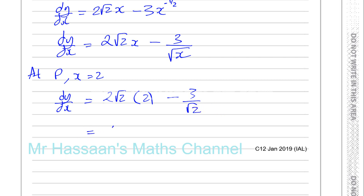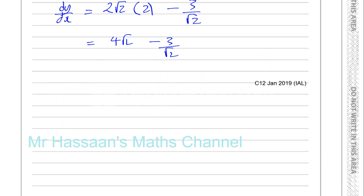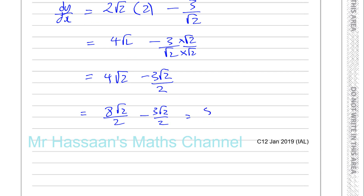This gives 4 root 2 minus 3 over root 2. They want the answer in the form A root 2, so we rationalize: multiply 3 over root 2 by root 2 over root 2. That gives 4 root 2 minus 3 root 2 over 2, which is 8 root 2 over 2 minus 3 root 2 over 2, giving 5 root 2 over 2.